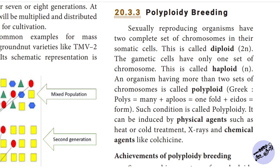Polyploid breeding. Sexually reproducing organisms have two complete sets of chromosomes in the somatic cells. This is called diploid, represented as 2n. There are 2 sets of chromosomes in the somatic cells.